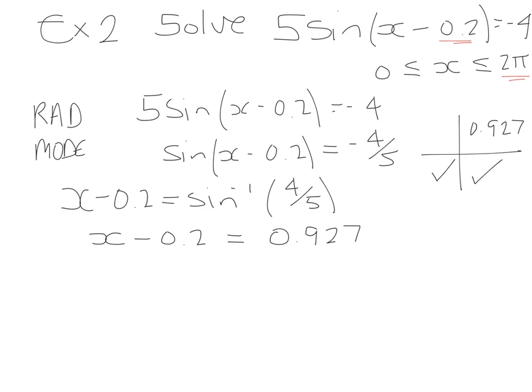That's not one of the values that we want as our final answer. So we're going to have to work out quadrants 3 and 4. Oh, doing it again. I'll rub that out. So x - 0.2. The third quadrant is going to be π + 0.927. And the fourth quadrant is going to be 2π - 0.927. When we work that out, we get x - 0.2 = 4.06 and 5.36.